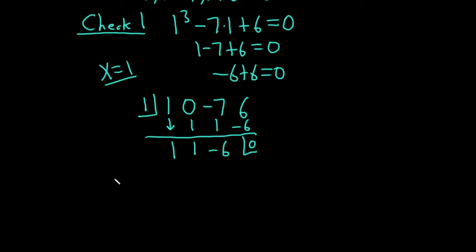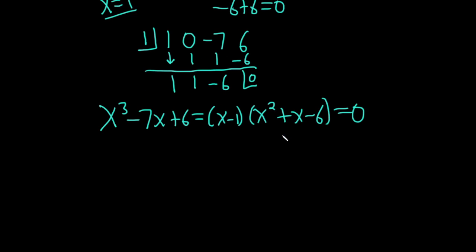Now we can factor this fully. Let me write it again. x cubed minus 7x plus 6. This is equal to, well, we know that 1 is a solution, so x minus 1 is a factor. And then this gives us the other factor here. You want to start at 1 less. Because this was a cubic, you want to start at x squared. So it's 1 times x squared plus 1 times x minus 6. And we were setting this equal to 0. That's the whole point, I was trying to solve this cubic equation.